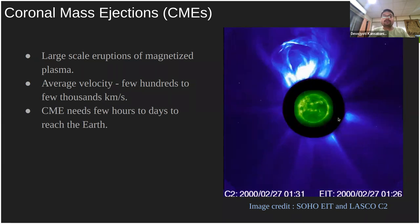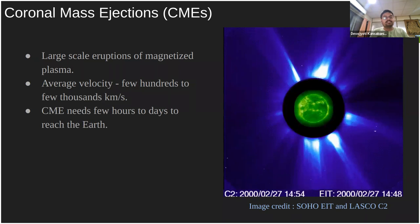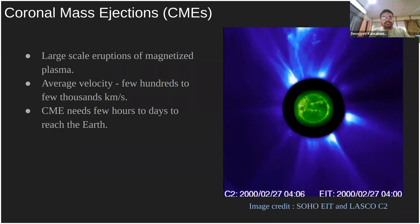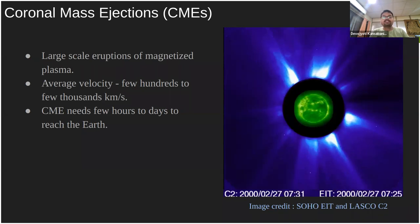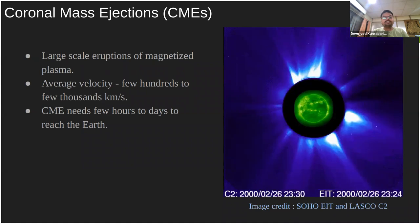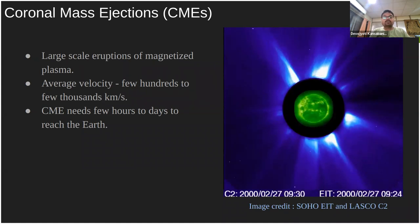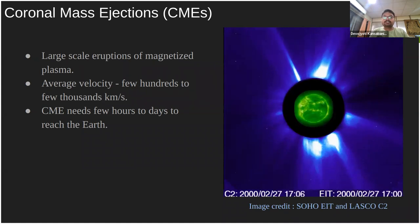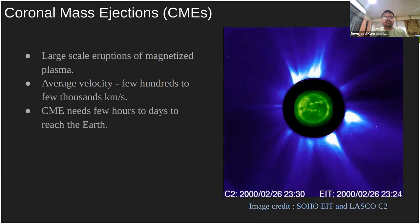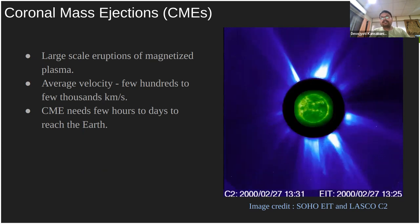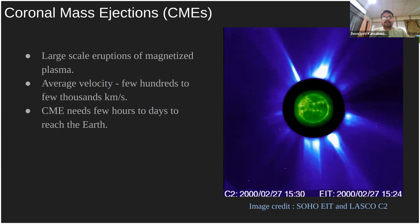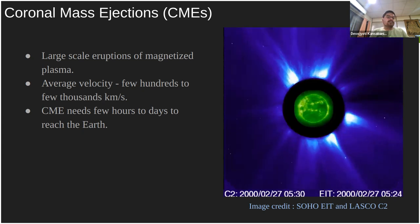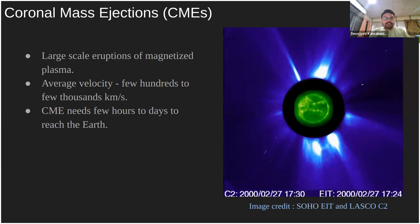Coronal mass ejections are large-scale eruptions of magnetized plasma from the sun into the heliosphere. The average velocity of these large eruptions varies from a few hundreds to a few thousands of kilometers per second. They are mostly observed using coronagraphs in white light observations. Depending on the velocity, CMEs need a few hours up to a few days to reach the Earth.